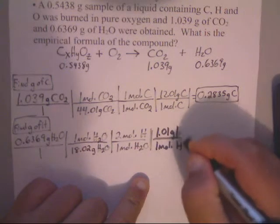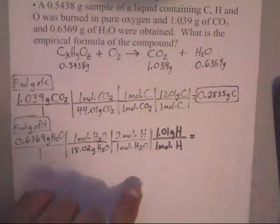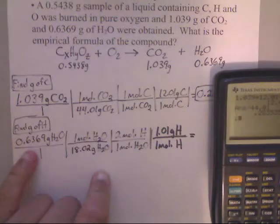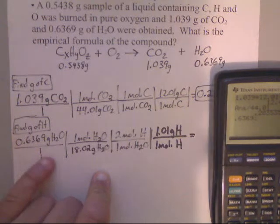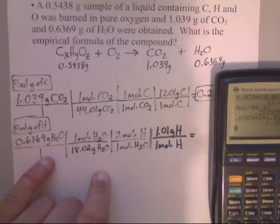Now, I'll put these into the calculator. I've got 0.6369 times 2 times 1.01. I get that number. Then, I want to divide that number by 18.02. Alright. So, I finally get this.